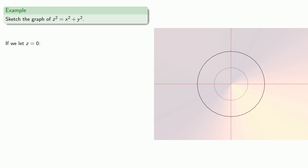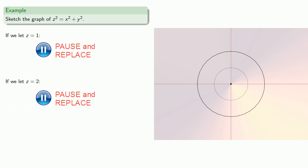If we let z equals 0, we get a circle centered at the origin with radius 0. Well, this is also known as a point. And if we let z equals 1 or z equals 2, we get a couple more circles.